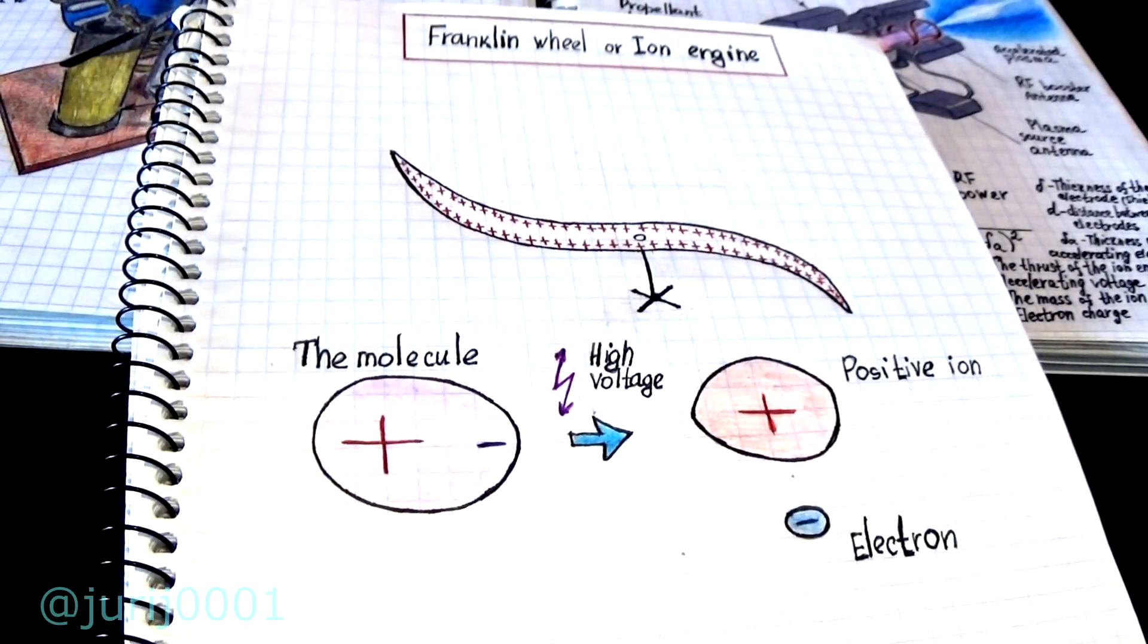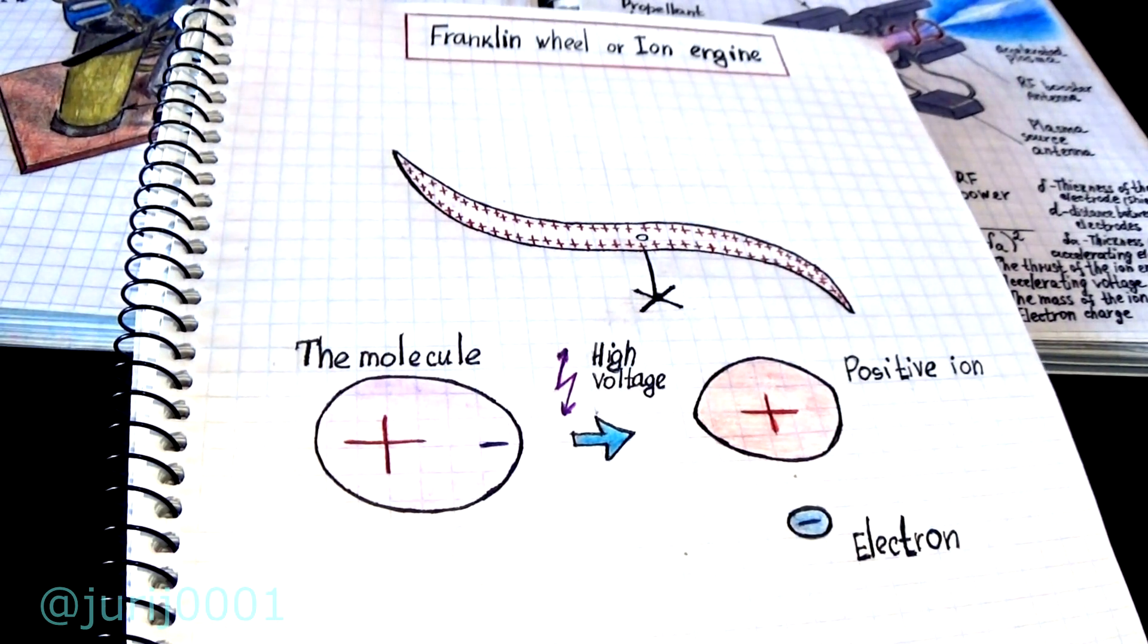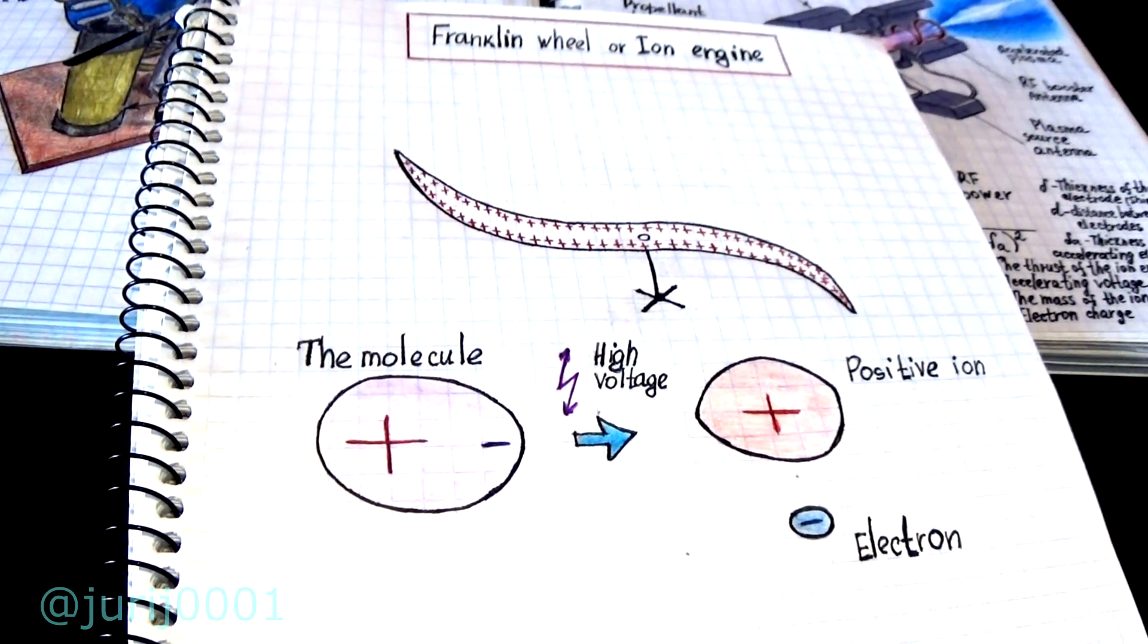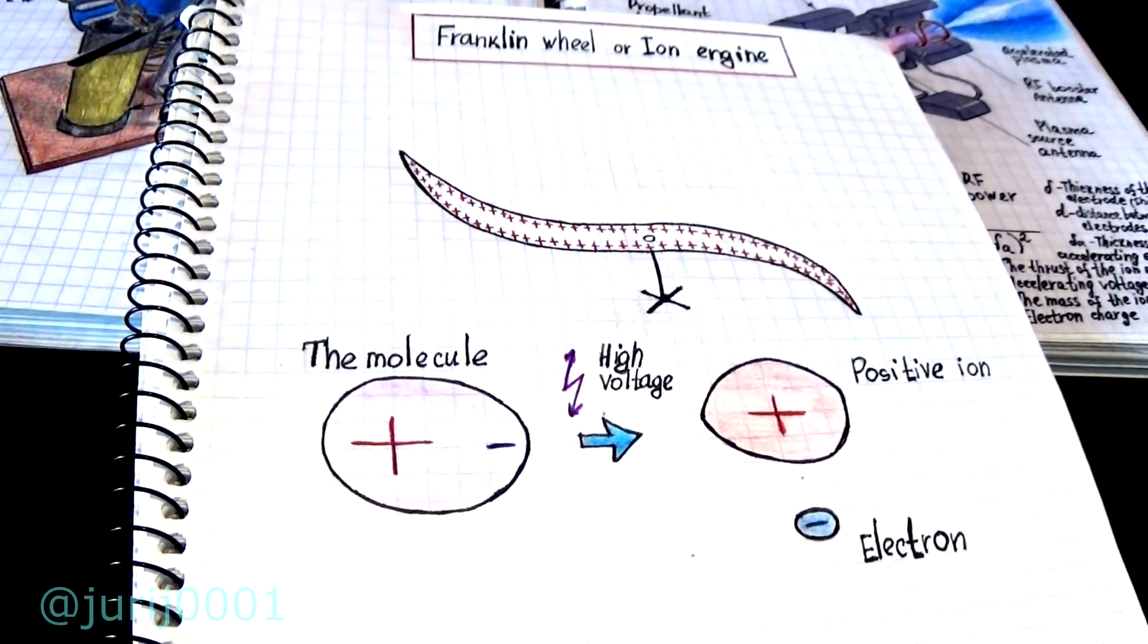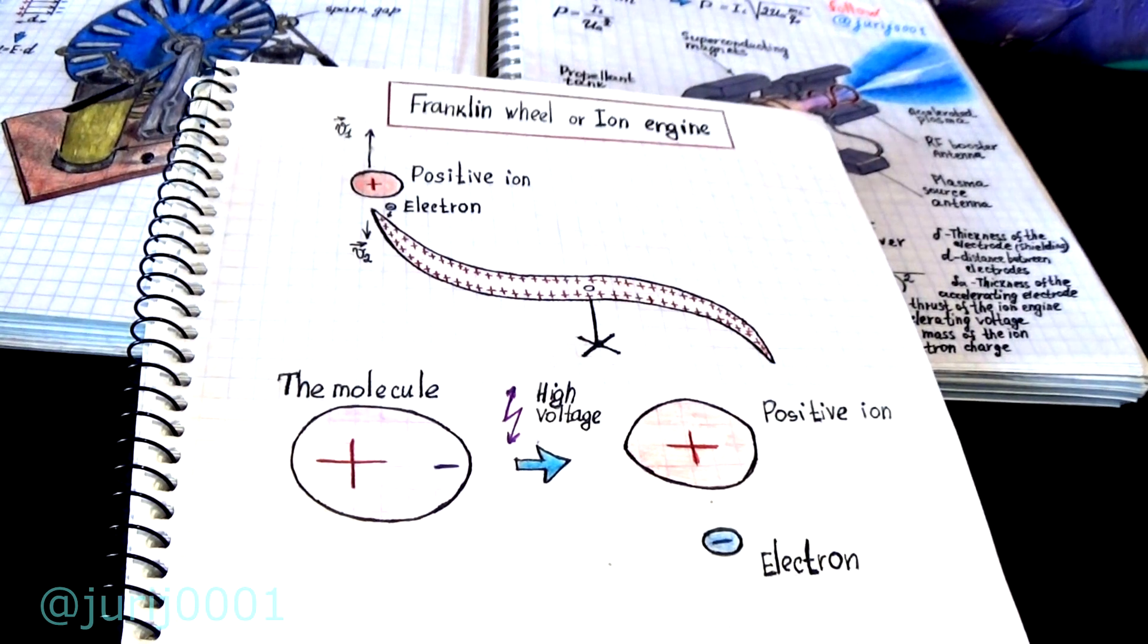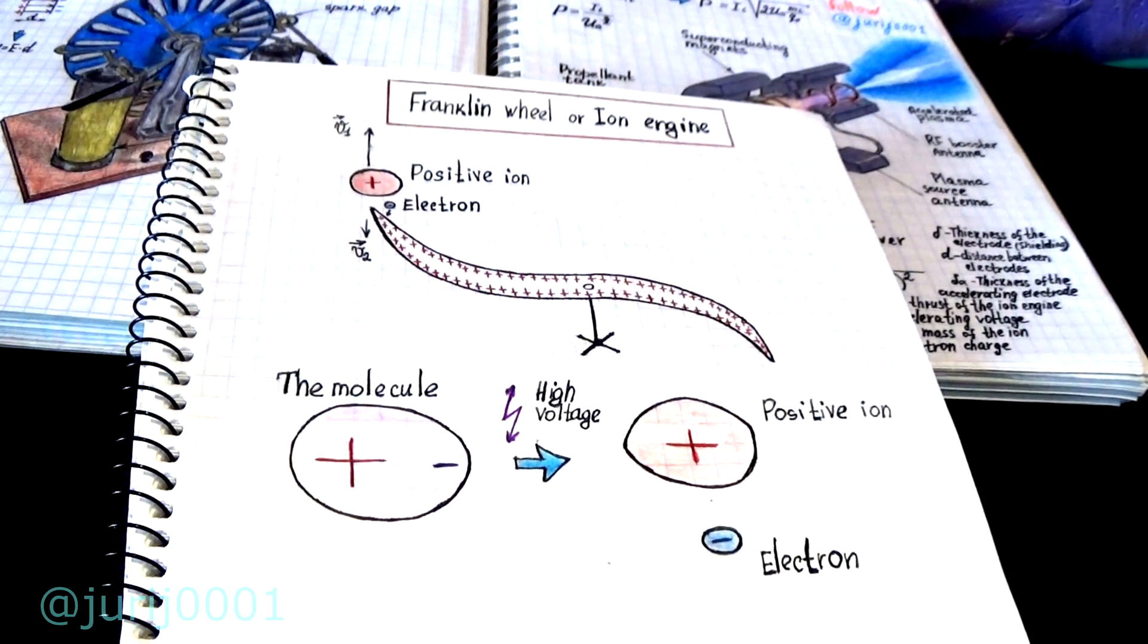Near the tip, a high electric field is formed which separates the molecules into two ions. In all cases, positive ions and negative electrons are formed. The mass of positive ions is much larger than the mass of an electron.